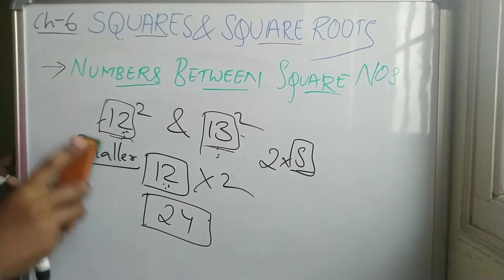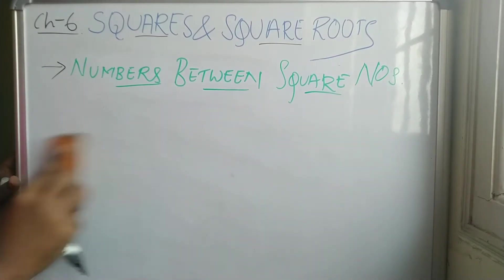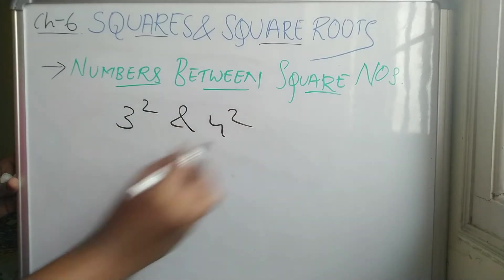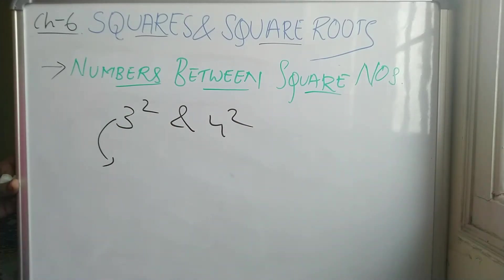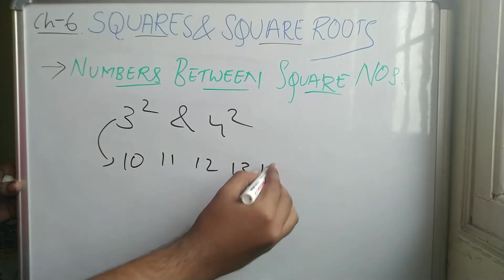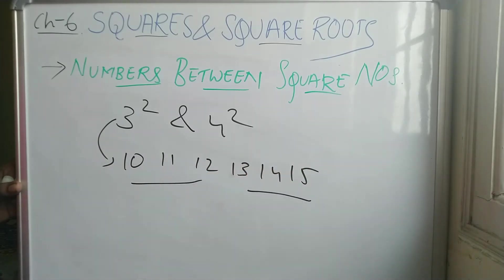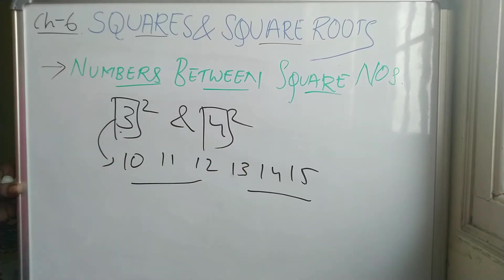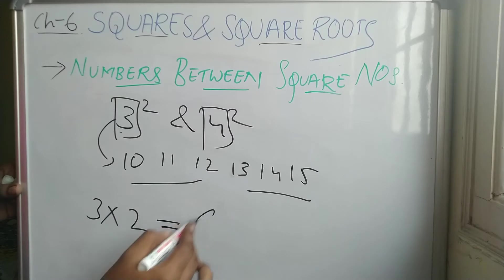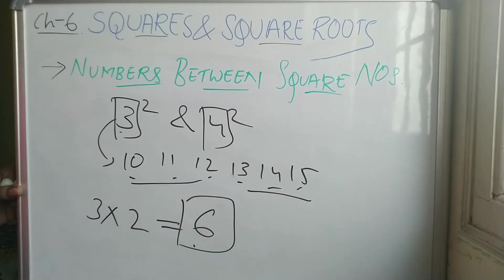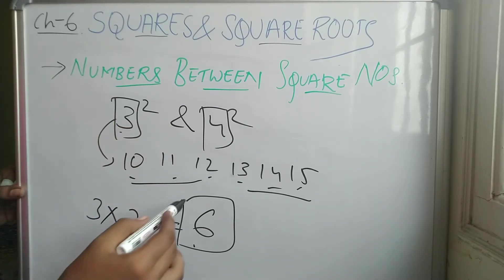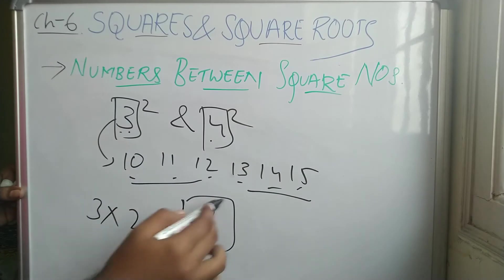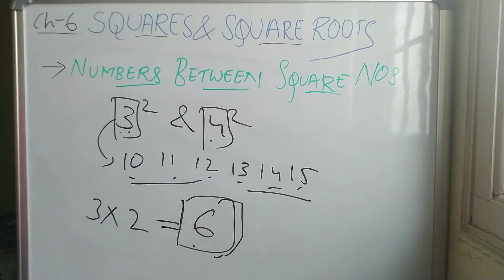Let's verify with the usual method for 3 squared and 4 squared. We found there were six numbers — 10, 11, 12, 13, 14, 15. Using the trick: the smaller number is 3, and 3 times 2 equals 6. So between 3 squared and 4 squared there are 6 numbers. This is the trick to find numbers between two square numbers.